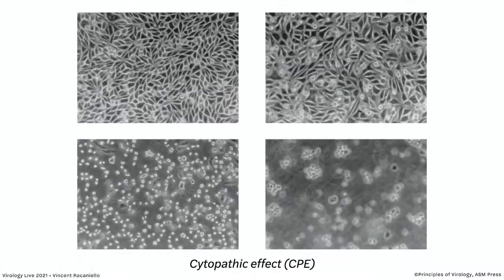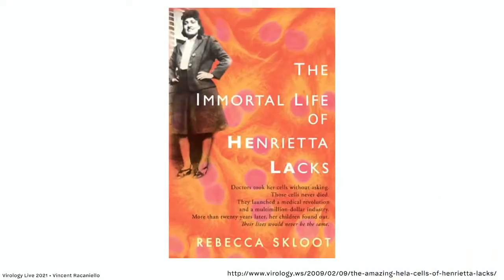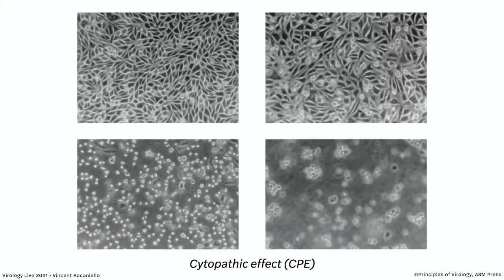Now we've got cells in culture, so we can put our virus on them. The cells in the dishes are growing under liquid. You take the dishes into the cell culture hood, aspirate off the liquid using a vacuum and pipette, so your cells are now exposed to the air. You put the virus on top — a small volume of virus — and you can infect your cells. The question then is, how do you know when your cells are infected? One of the ways is by what we call cytopathic effect, or CPE — a very important concept.